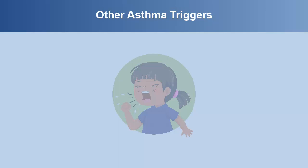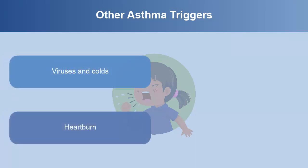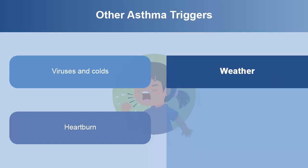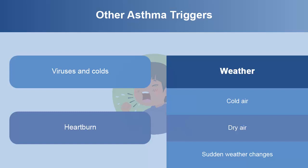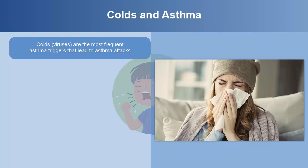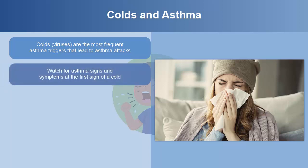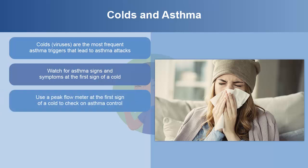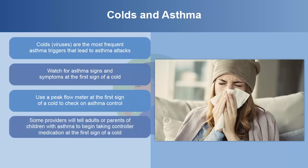Other asthma triggers include viruses and colds, heartburn, and weather, including cold air, dry air, or sudden weather changes. Colds or viruses are the most frequent asthma triggers that lead to asthma attacks. You should watch for asthma signs and symptoms at the first sign of a cold. Use a peak flow meter when you have signs of a cold to check on asthma control. Some providers will tell adults or parents of children with asthma to begin taking controller medicine along with your rescue medicine at the first sign of a cold.